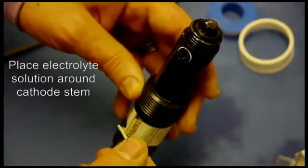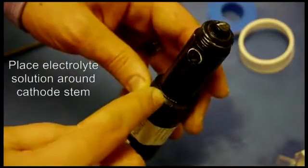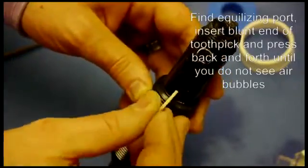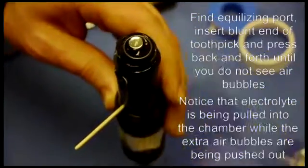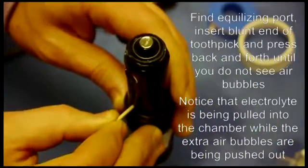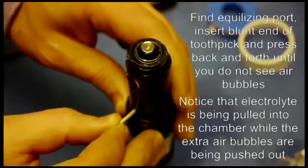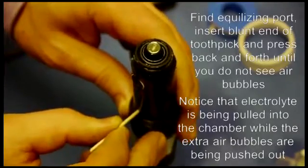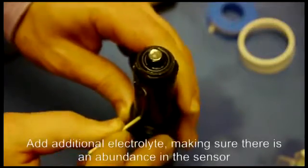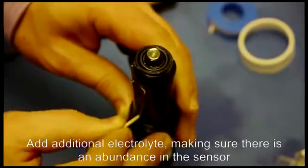Next find the pressure equalizing port, which is a small little hole above the threads. Take the flat end of your toothpick, place it inside, fill the solution on top of the cathode, and then press in to the equalizing port. See how I'm pushing the air out and it's getting replaced with the electrolyte solution? That's what we want. Do this several times until no more solution is left.